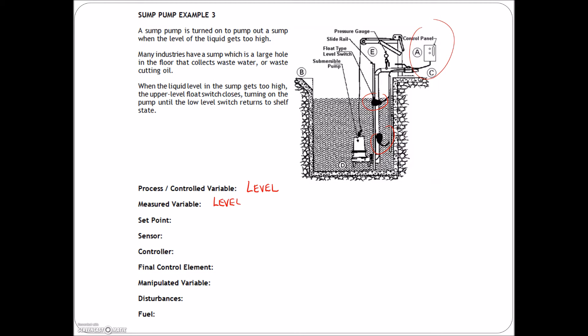The set point is where we want to be — in this case we want to be at the lower limit. The sensor — the thing that's turning the pump on and off — would be our float switch. The controller: there's a control panel there, but if this is just a float switch controlling the pump, then essentially the float switch is also the controller as well — there's nothing else in the circuit.